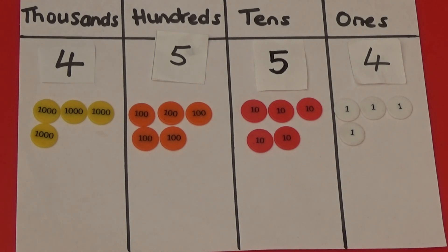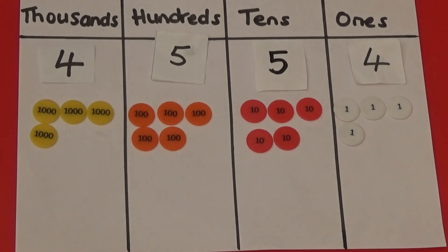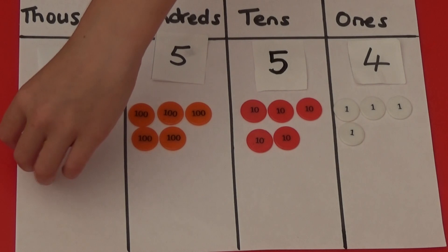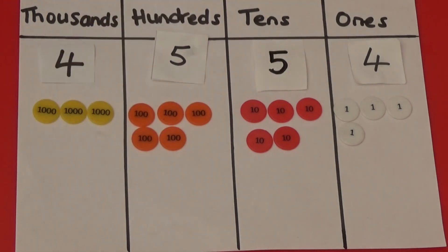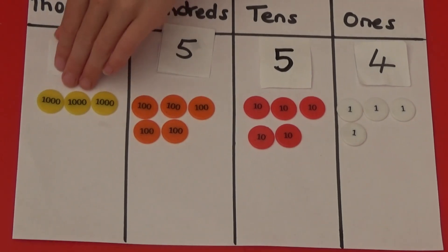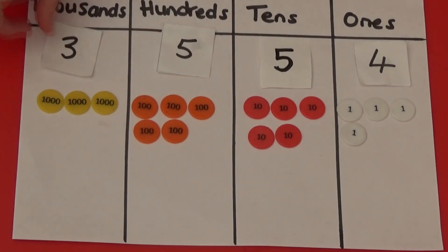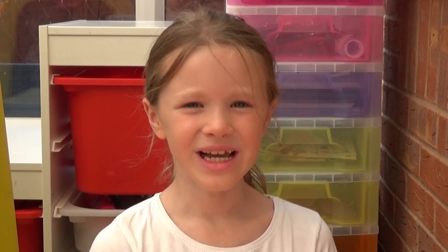If I want to subtract 1000 from this number, I only need to look at the 1000s column. To subtract 1000, I need to remove a 1000 counter. So my number now is 3554.